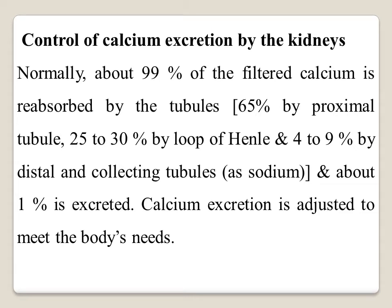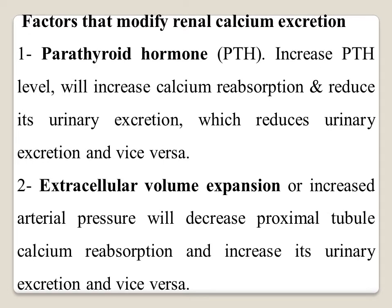Calcium excretion is adjusted to meet the body's needs. The first factor affecting renal calcium excretion is parathyroid hormone. When there is an increase in parathyroid hormone, this leads to increased calcium reabsorption and decreased urinary excretion of calcium, and vice versa.